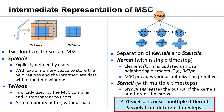Another important abstraction in the IR is about the kernel and the stencil. A kernel defines a spatial computation pattern within a single time step, such as a 3D 7-point kernel, and a stencil aggregates the output of kernels at different time steps. Therefore, a stencil can consist of multiple different kernels from different time steps, which makes it possible to express complex stencil computations in MSC.